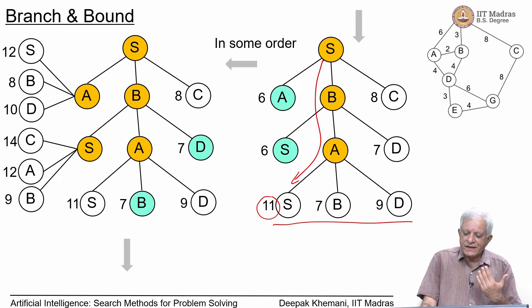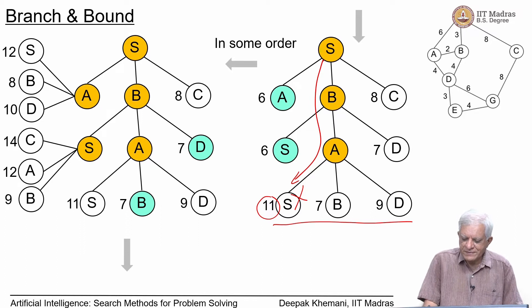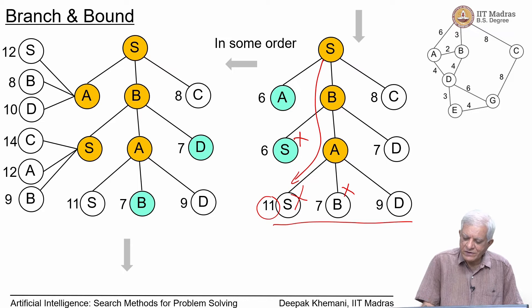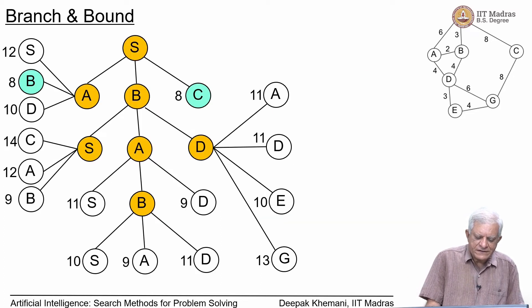One simple improvement: if the same node occurs in a path, exclude that path. Every node in a path should be included only once. So we exclude paths that revisit S or B. At this stage we have two nodes A and S with cost 6, and we expand them to get the successors shown on the right. After expansion, there are two nodes with the lowest cost — C and B with cost 8 — and we would refine them.